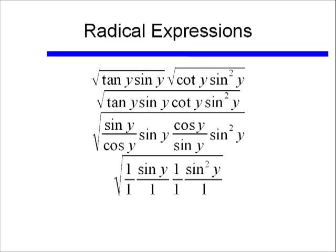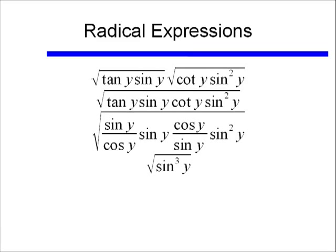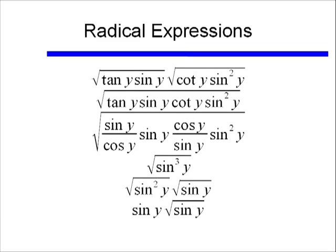And then I'm left with the square root of sine cubed y. Alright, once I have that, I realize I have a perfect square in there. I have sine squared y times sine y, so I can break that up into two separate square roots, and my final answer is sine y times square root of sine y. And that is a far cry from where we started, so we really did simplify this radical expression.